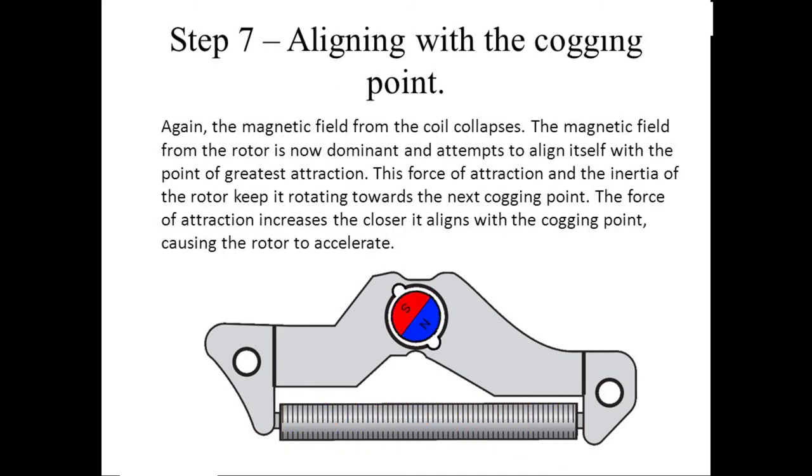Step 7: Aligning with the cogging point. Again, the magnetic field from the coil collapses. The magnetic field from the rotor is now dominant and attempts to align itself with the point of greatest attraction. This force of attraction and the inertia of the rotor keep it rotating towards the next cogging point. The force of attraction increases the closer it aligns with the cogging point, causing the rotor to accelerate.